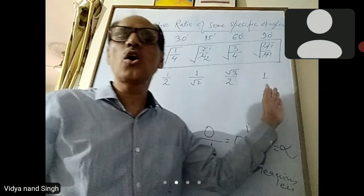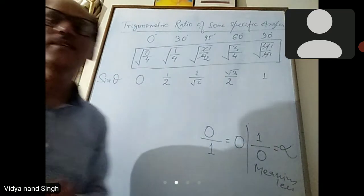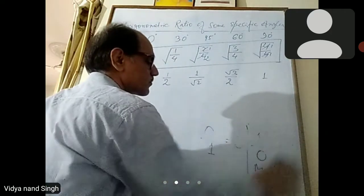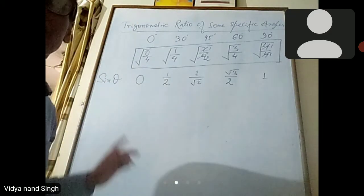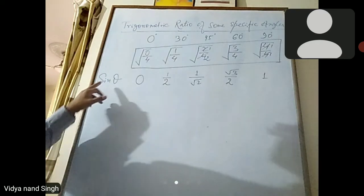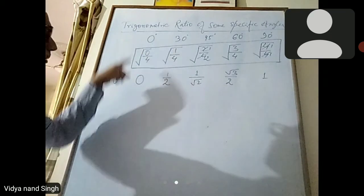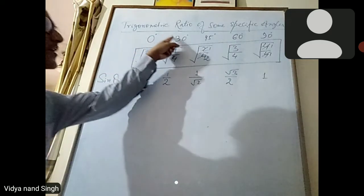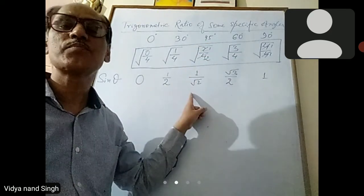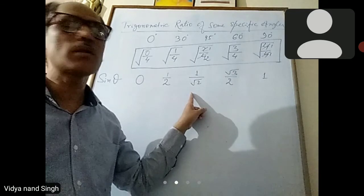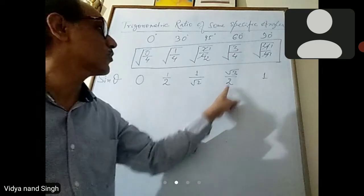The value of sine theta: sin 0° equals 0, sin 30° equals 1 by 2 (or 1 by root 2), sin 45° equals 1 by root 2, sin 60° equals root 3 by 2, and sin 90° equals 1.